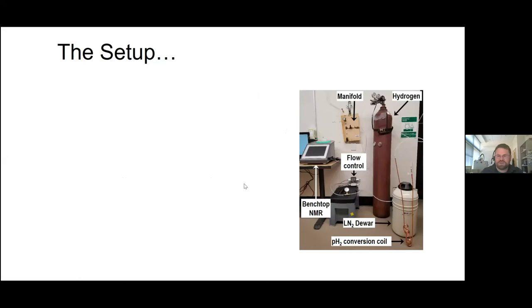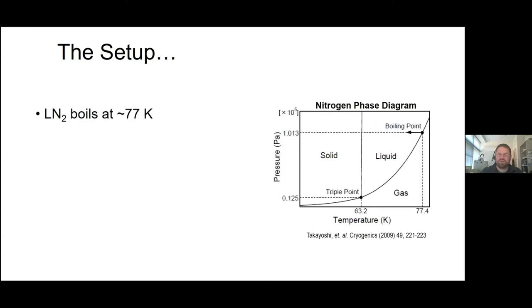Here's a picture of our lab's very humble parahydrogen setup. The only thing we spent money on was the liquid nitrogen dewar, which I bought for this exact study. We also splurged on a flow controller. The rest was put together with bits and pieces we found around the physics department, not counting the benchtop NMR. We use liquid nitrogen to make our parahydrogen, which boils at 77 Kelvin. But you can make colder liquid nitrogen, even though it's at 77 Kelvin, the triple point's down around 63 Kelvin.